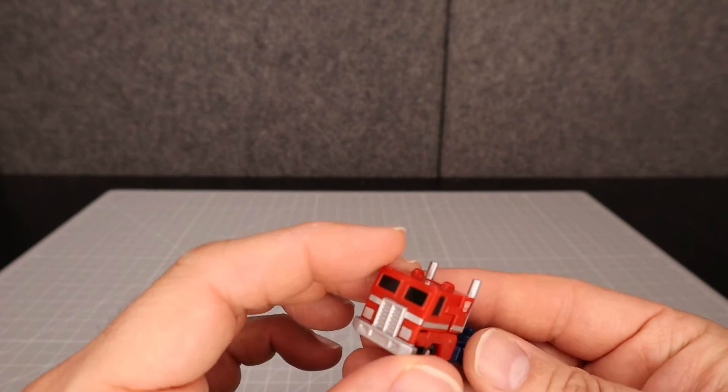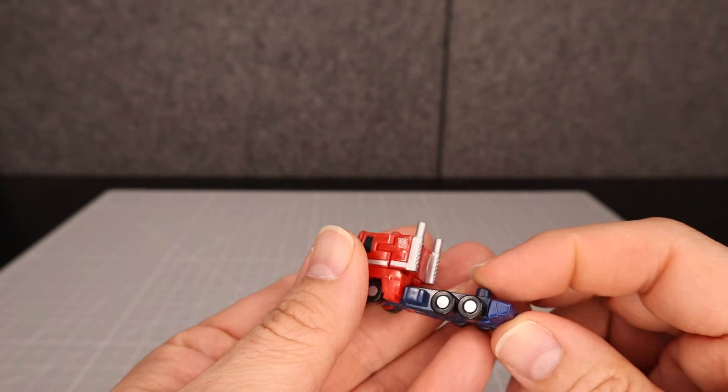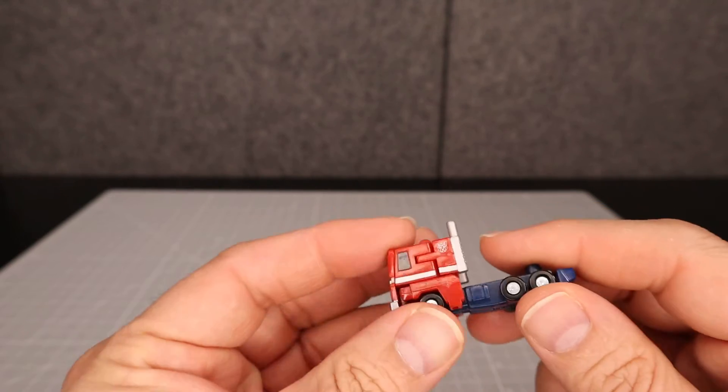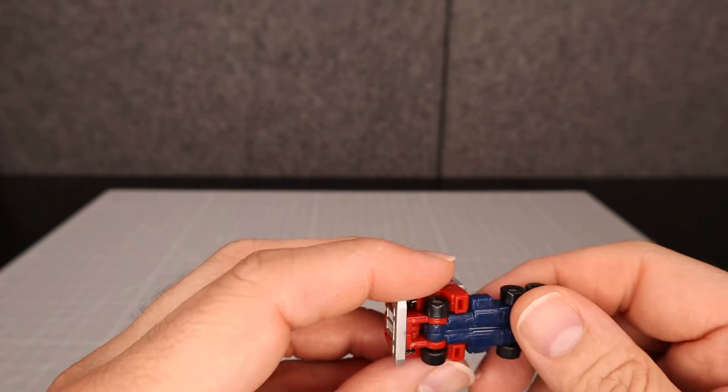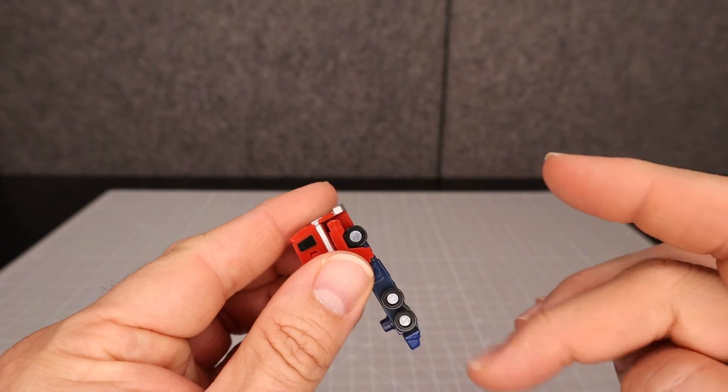And this is a very, very tiny small thing. These wheels though, they're plastic but you're able to roll them and they roll just fine.